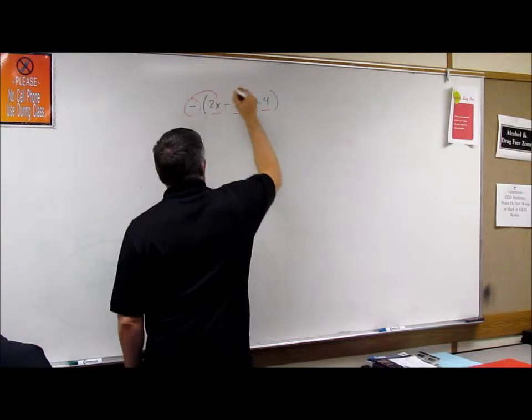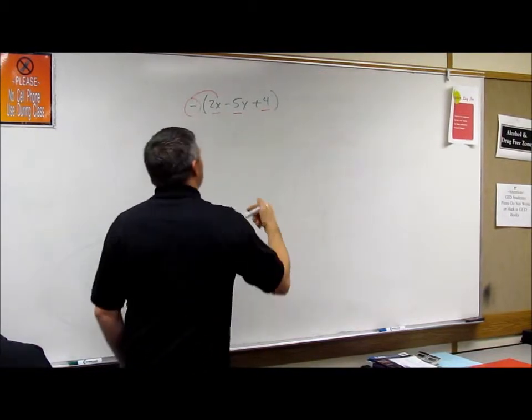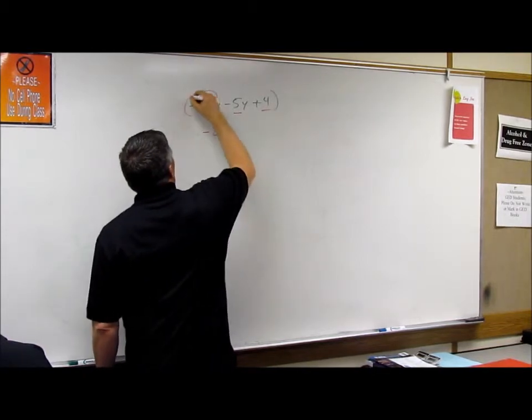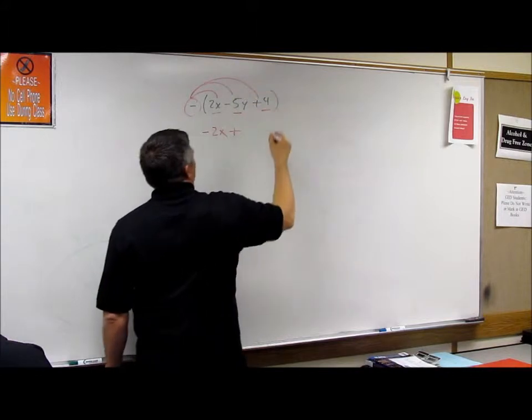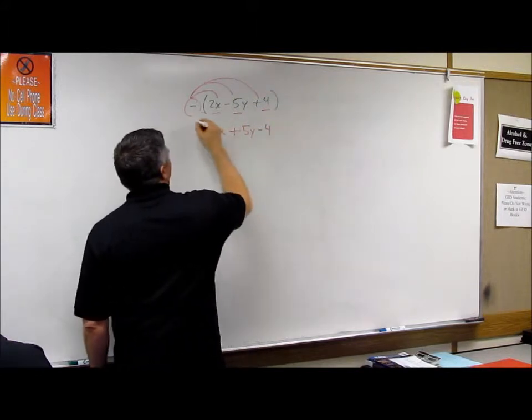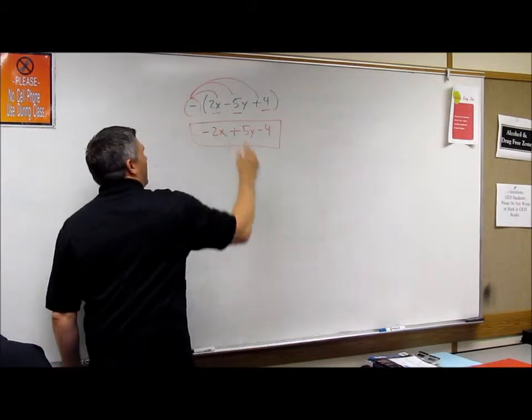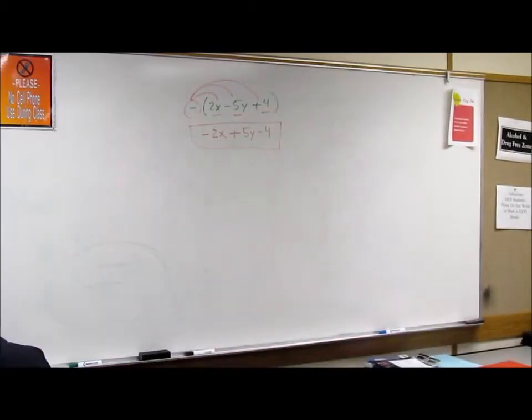We're going to take this paper and bring it to everybody on the block. This paper goes to everybody on the block. We start with this one. A negative times a positive is a negative. A negative times a negative is a positive. And a negative times a positive is a negative. That's about it.